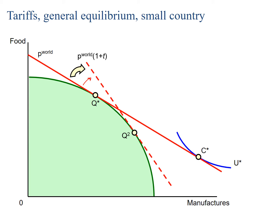Why is that? One way to look at it is by comparing how much food you get relative to manufacturers. You now get much less manufacturers for each unit of food because manufacturers have increased in price, whereas before a one unit increase in food would result in quite a large increase in manufacturers. In terms of production, we used to produce S1 level of manufacturers but now we produce S2 — so manufacturing has increased. However, the production of food has decreased.